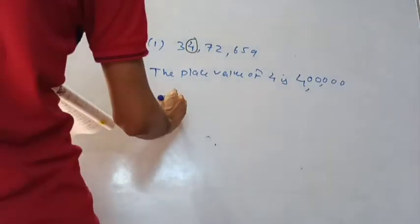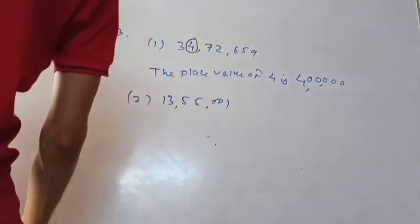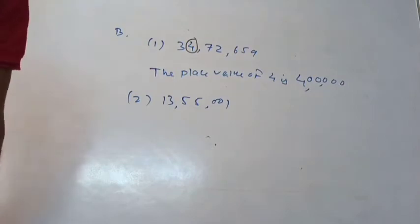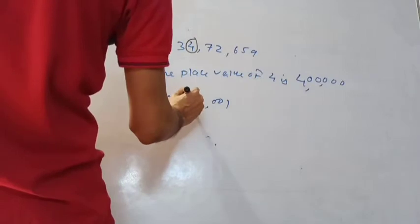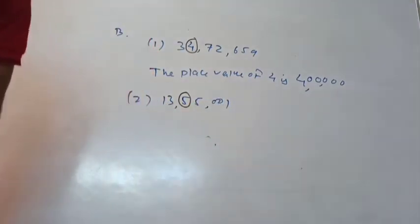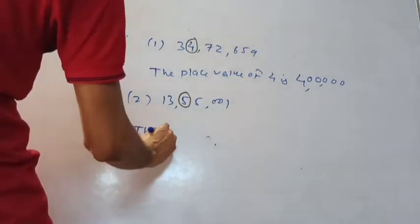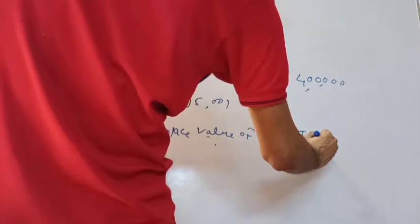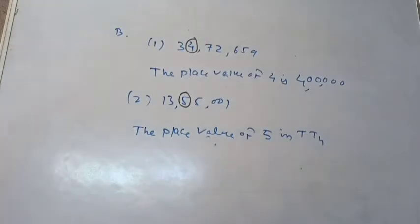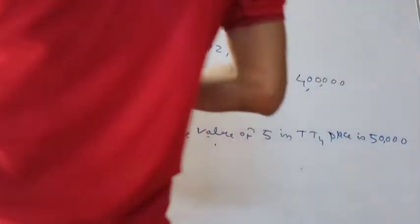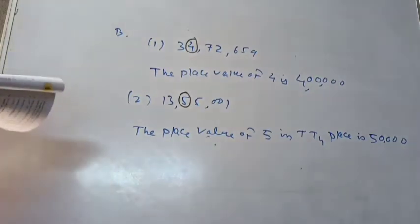Number two: the given number is 1,355,001. We have two fives in this number — in two different places. The question asks for the place value of 5 in the ten-thousands place. Since 5 is in the ten-thousands place, the place value of 5 is 50,000. Next: place value of zero — you can do that yourself. Next one: six hundred.